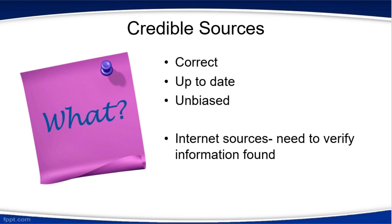It is important to use credible sources for research. Credible means that the information is correct, up-to-date, and unbiased. A source that is free of bias is not prejudiced towards one side or the other, but presents arguments for or information supporting both sides. Though certain facts, such as census statistics, cannot be debated, the interpretation or assigning of meaning to those statistics can be.